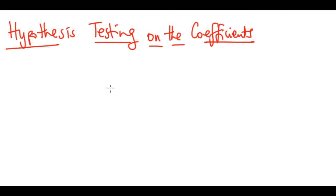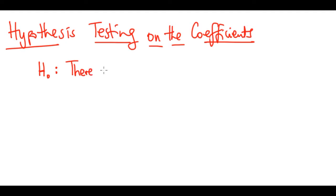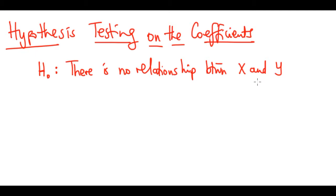The most common hypothesis test involves testing the null hypothesis. If you don't know anything about hypothesis testing, pick up a statistics book before watching this. The null hypothesis H0 says there is no relationship between x and y, versus the alternative H1 which says there is a relationship between x and y.